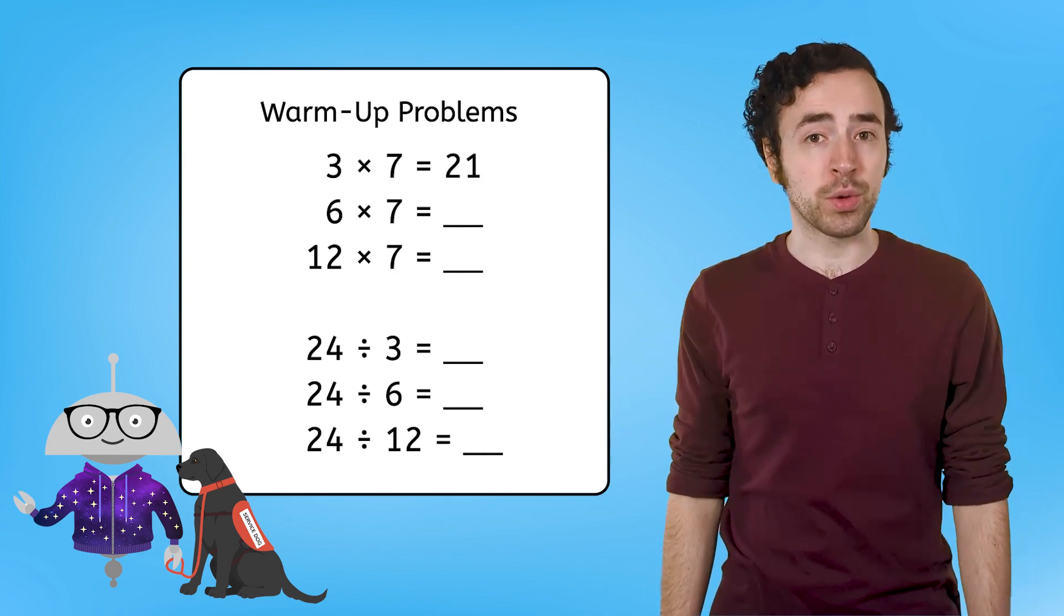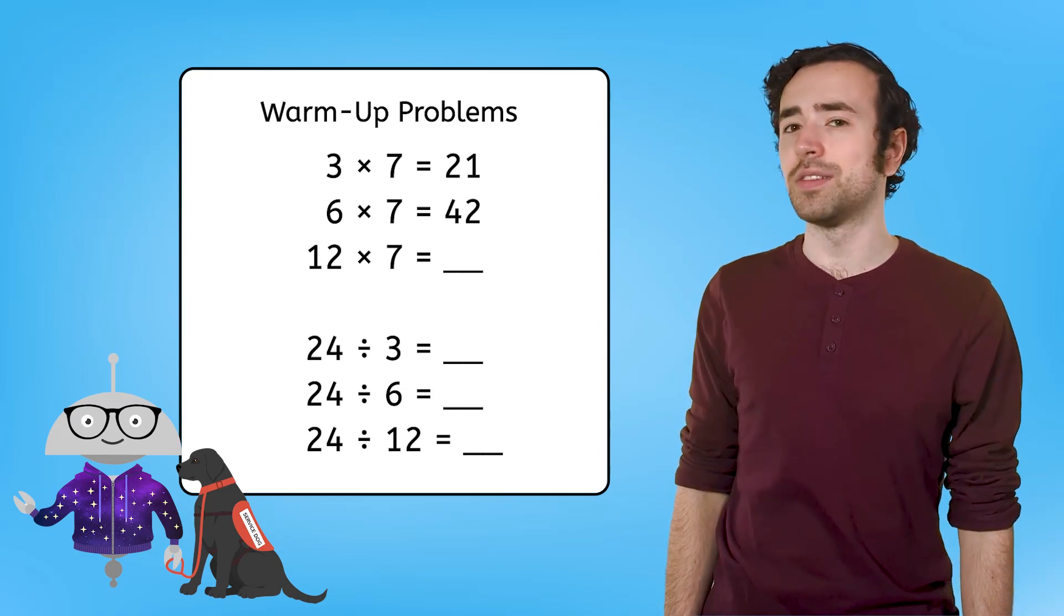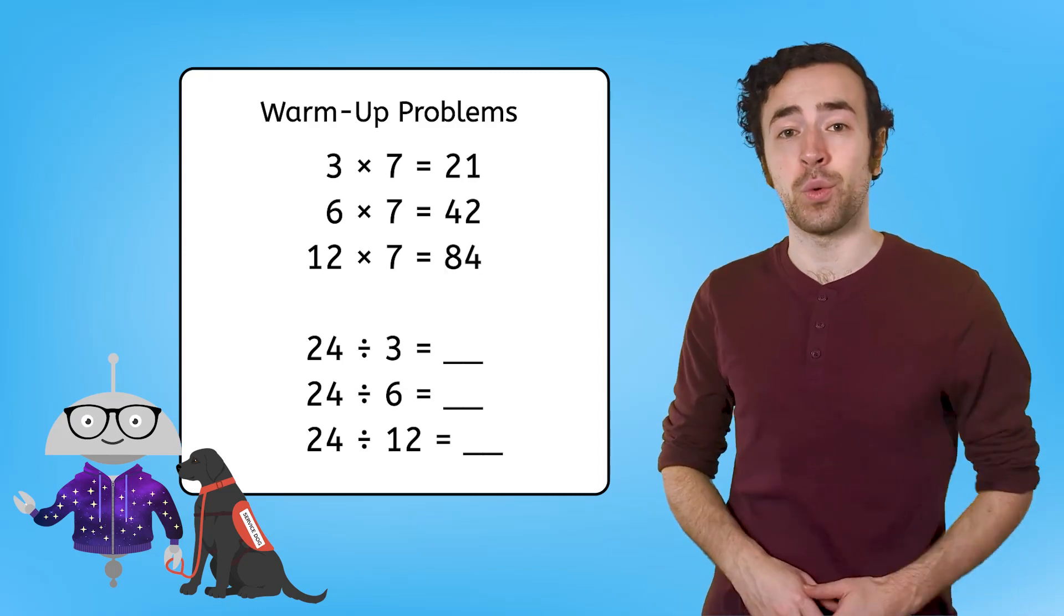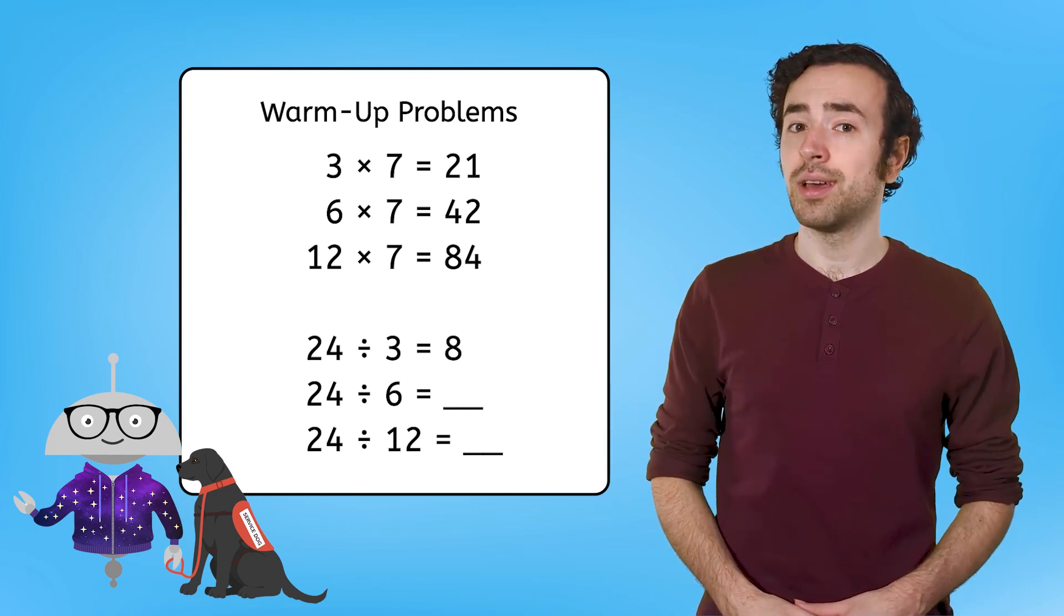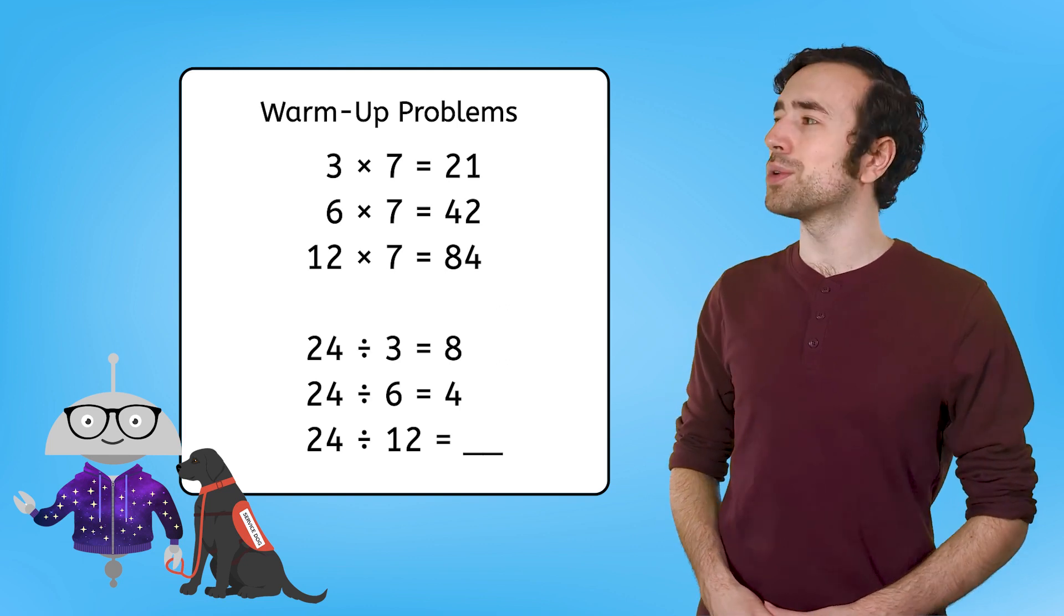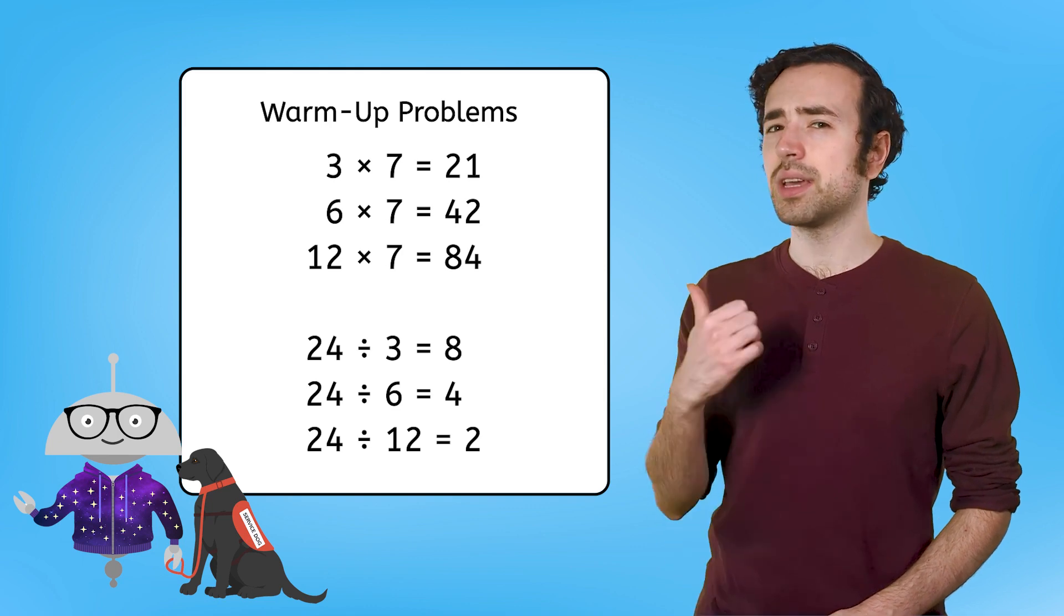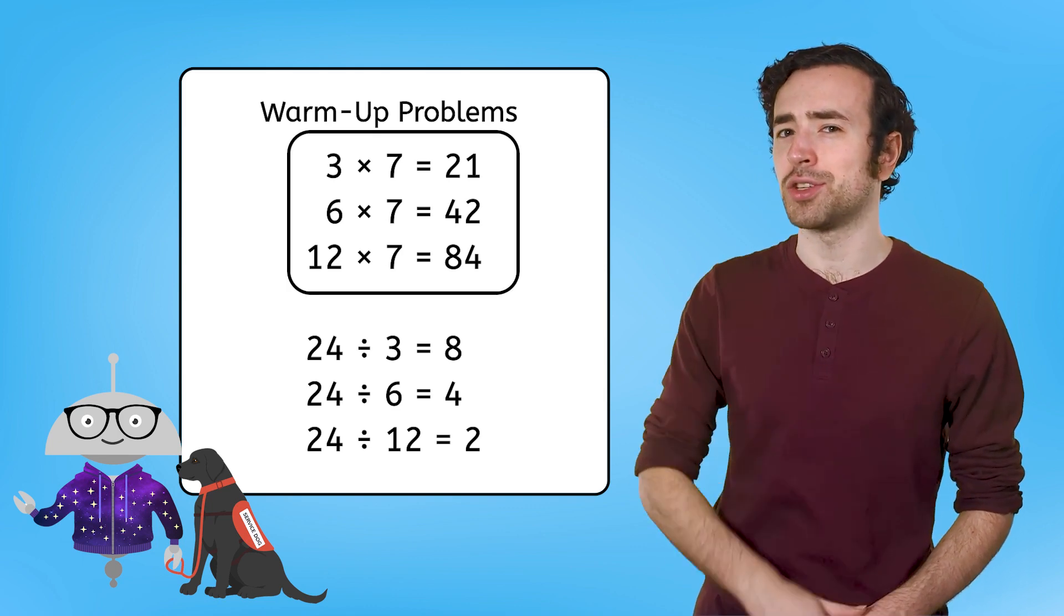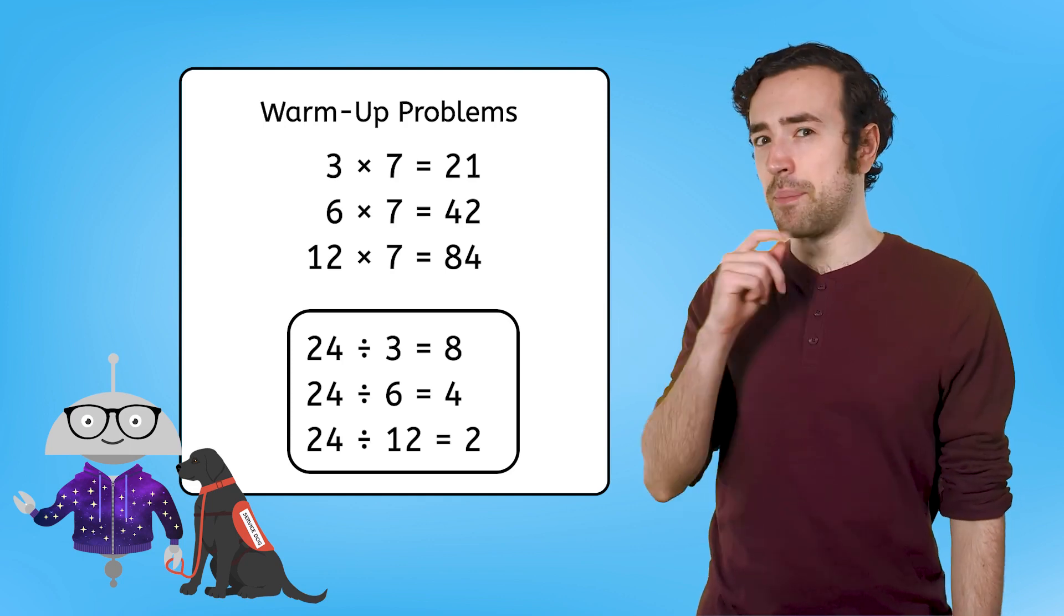3 times 7 equals 21. 6 times 7 equals 42. And 12 times 7 equals 84. While 24 divided by 3 equals 8, 24 divided by 6 equals 4, and 24 divided by 12 equals 2. Noticing any patterns with these multiplication equations? And the division equations, notice anything familiar there?